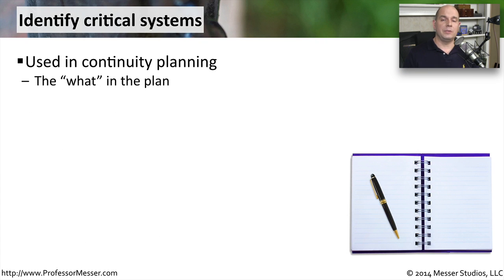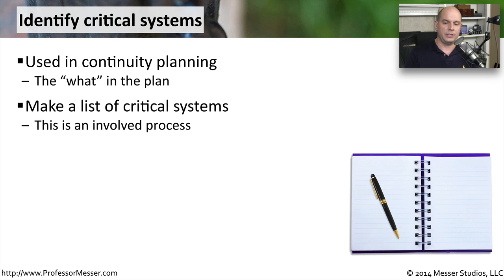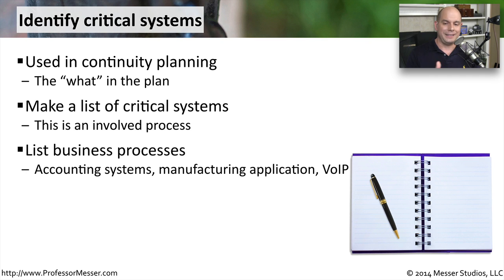It's important to be able to identify what these critical systems might be. We use these during continuity planning to figure out what we need to protect as part of the plan. So the first step would be to make a list of all your critical systems. This could be a very involved process, especially if you have many different systems and many different processes inside of your organization. You're then going to want to list out your business processes.